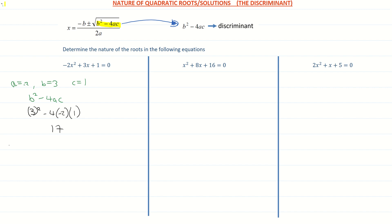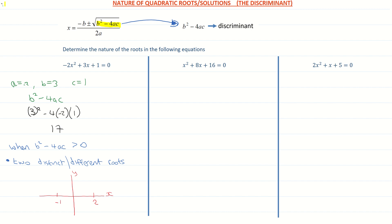What that tells us is: when the value of b squared minus 4ac is greater than 0, we can conclude that this quadratic equation has two different, two distinct roots. On our coordinate graph, this is a negative quadratic and it would look something like this. It's not telling us where it crosses the x-axis — it's just telling us that there are two distinct or different roots to that quadratic equation. So when b squared minus 4ac is greater than 0, we have two distinct roots.